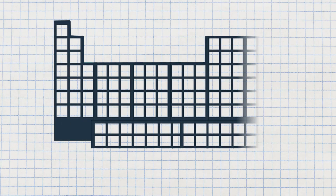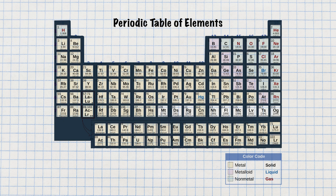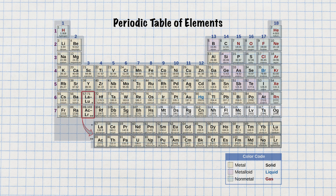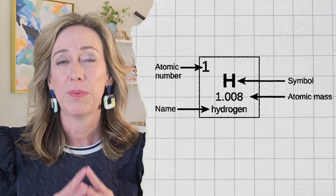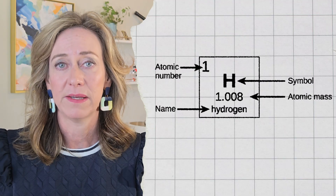Now these atoms come in different varieties, each with a distinct personality. We call these varieties elements, and they are meticulously organized in the periodic table. Think of it as an apartment complex for the elements, each assigned with its own address. Each of these elements is defined by something called the atomic number.